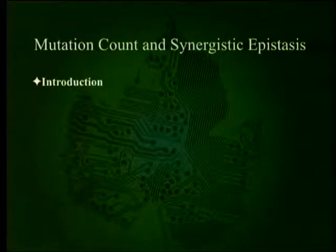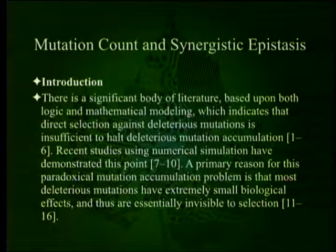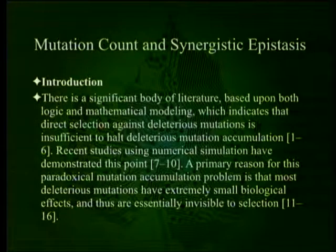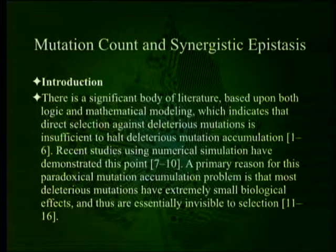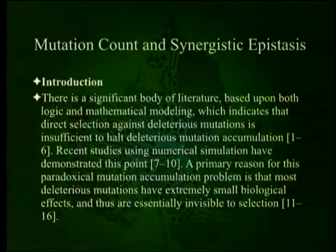Now let's go back to the first paper. There's a significant body of literature based upon both logic and mathematical modeling indicating that direct selection against deleterious mutations is insufficient to halt their accumulation. Recent studies using numerical simulation have demonstrated this. The idea is that the genome should, by all theory, be degenerating. A primary reason is that most deleterious mutations have extremely small biological effects and are essentially invisible to selection — comparable to rust on a car, where a little bit here and there doesn't matter, but twenty years of it hollows out the fenders completely.